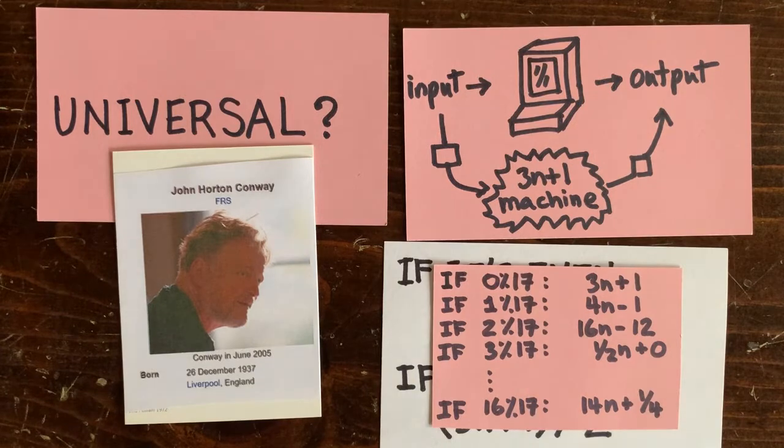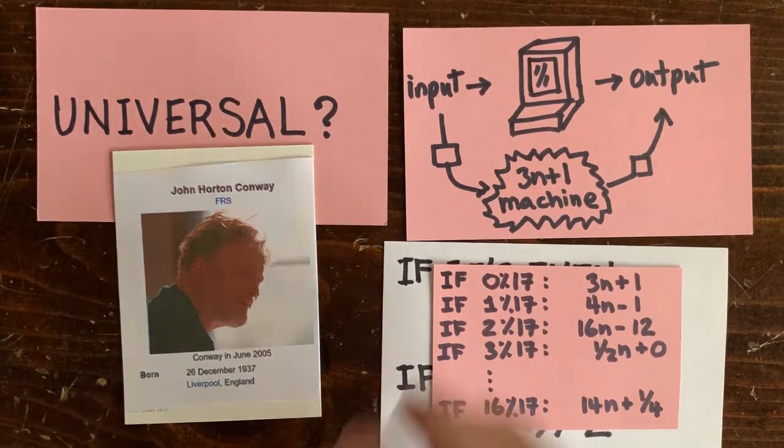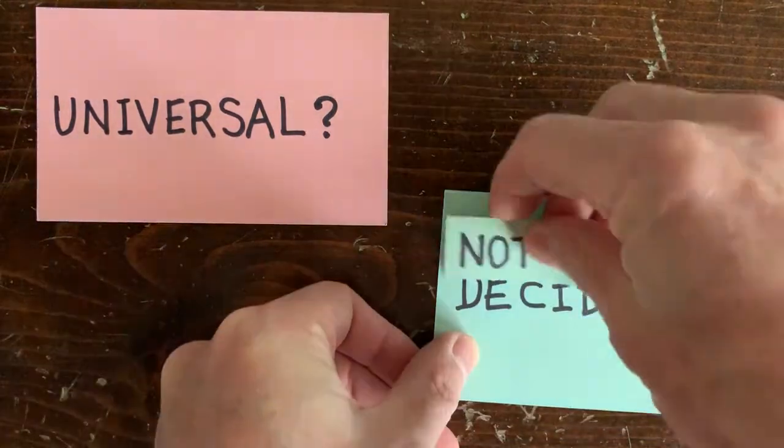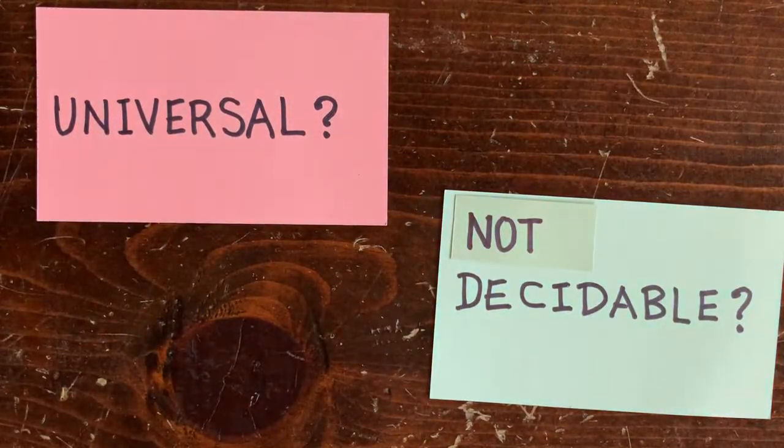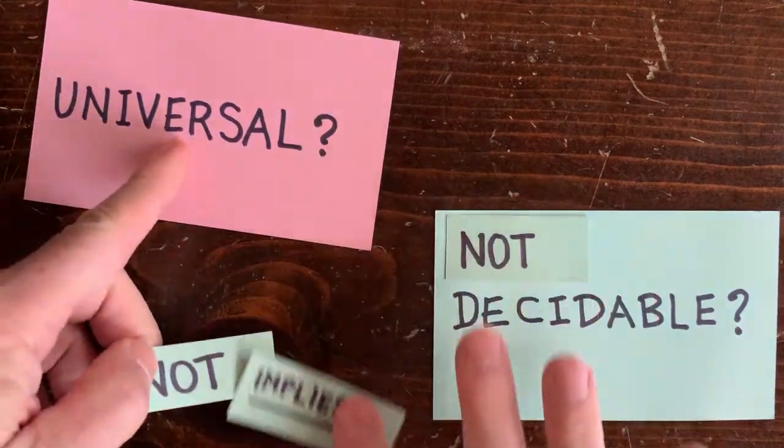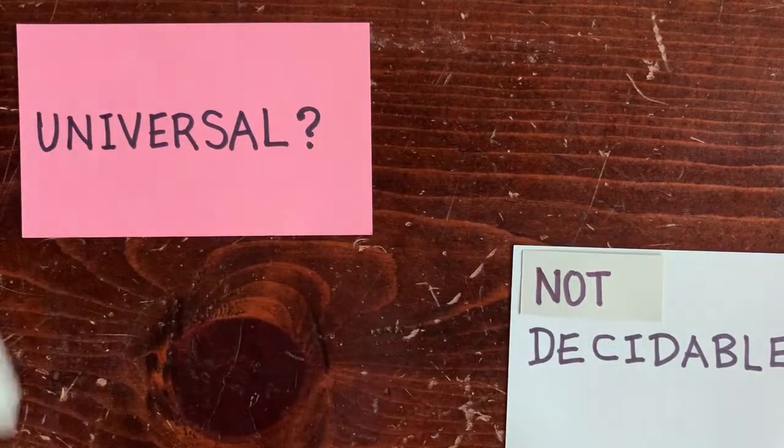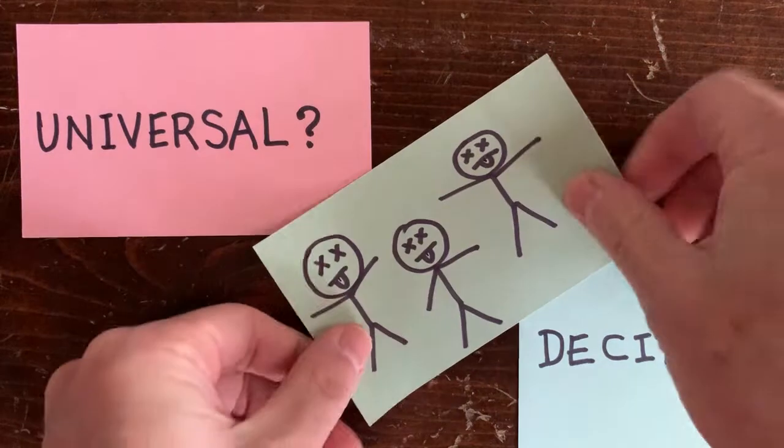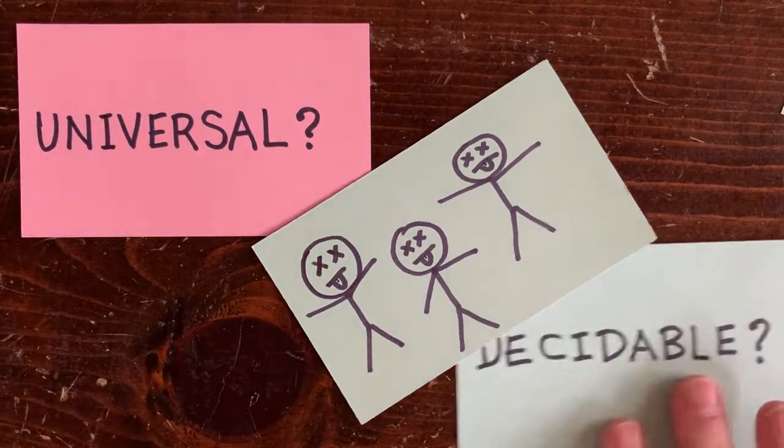Now, if the 3N plus 1 machinery were universal, then it would also have to be undecidable. Otherwise, we could use it to decide questions that are known to be undecidable. But even if the 3N plus 1 is not universal it could be undecidable. That's because mathematicians and computer scientists say there's a no man's land currently between universal power and decidable power.